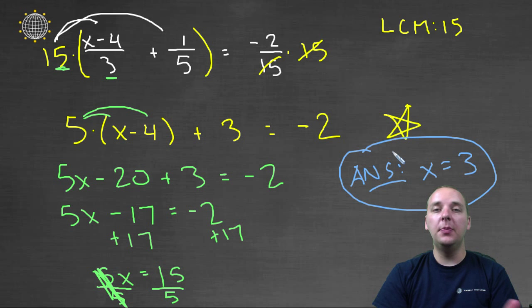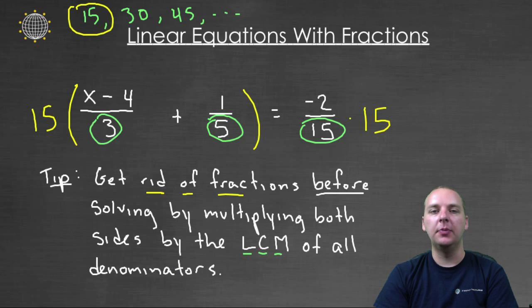And so you can check this like we typically would. We can take this number and plug it back in the original equation, even the one that has fractions, and it should make the equation true. So anyways, this is how we solve equations that have fractions in them. We get rid of the fractions first by multiplying both sides of the equation by the least common multiple of all the denominators.